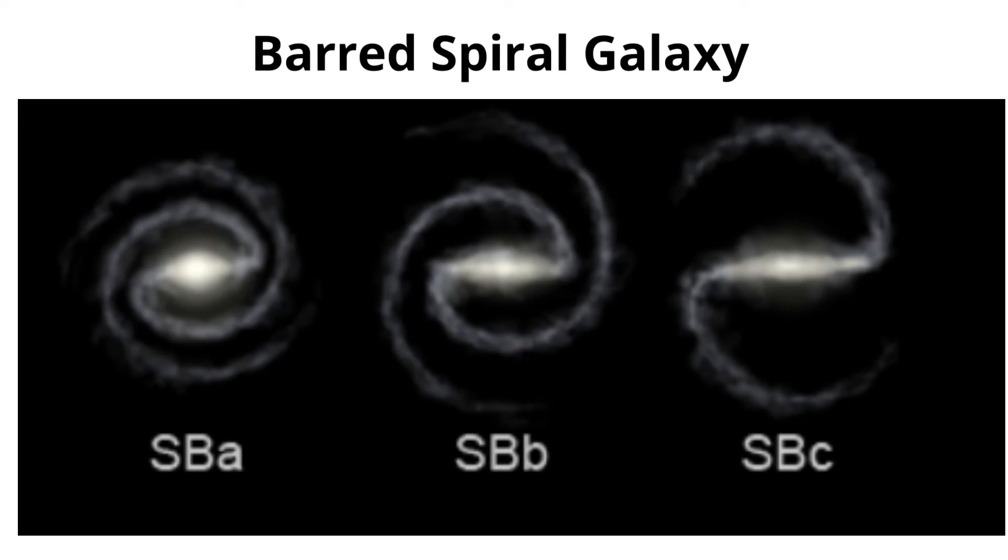Barred spiral galaxies are also subdivided, and the letters that are used are S-B. A have tightly woven arms, and S-B-C have loose arms.